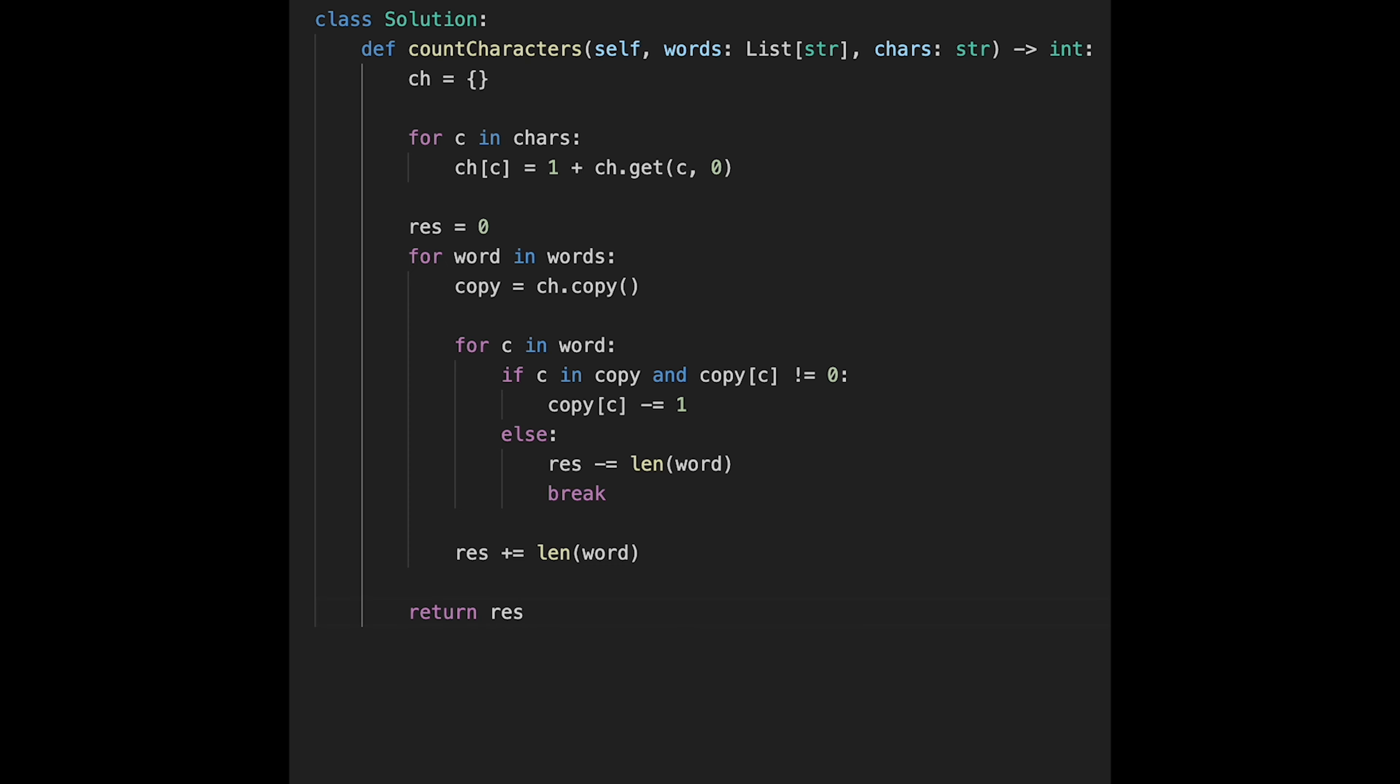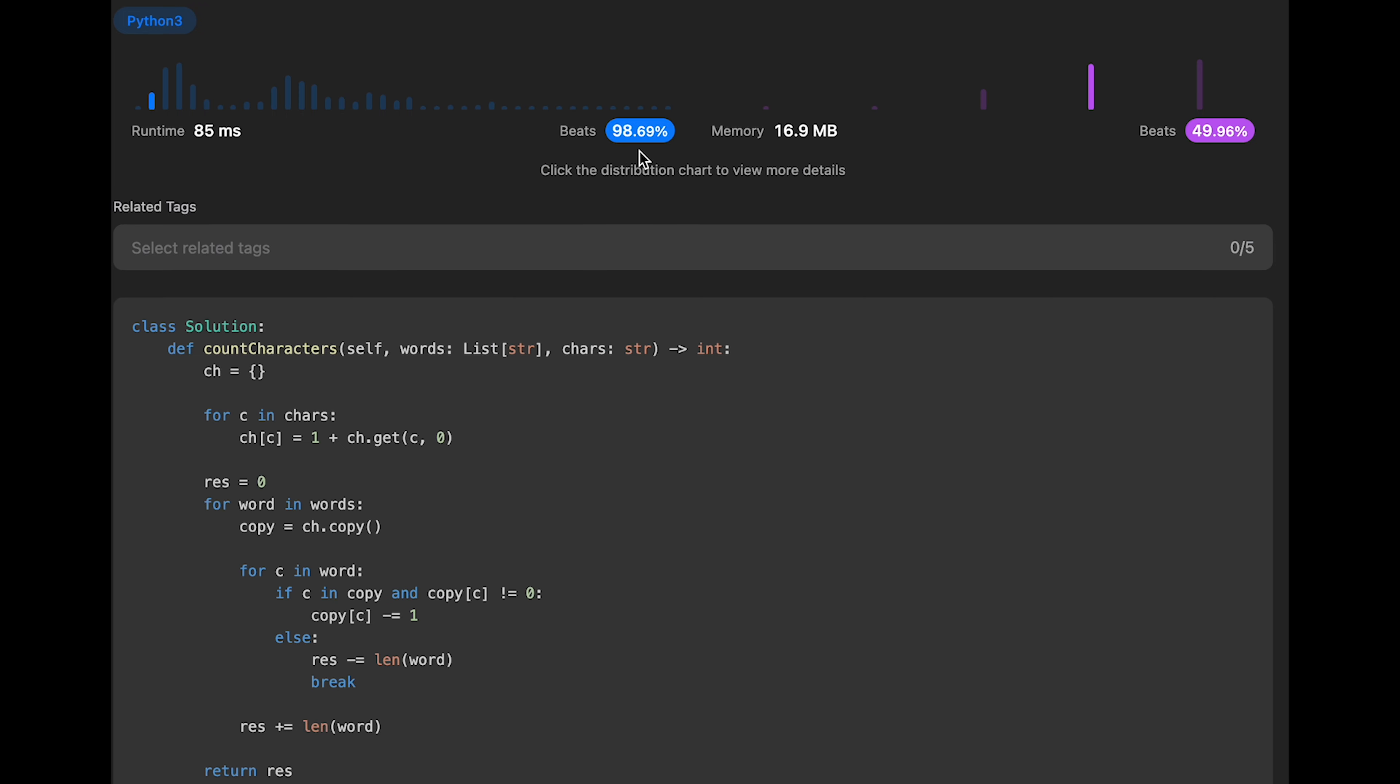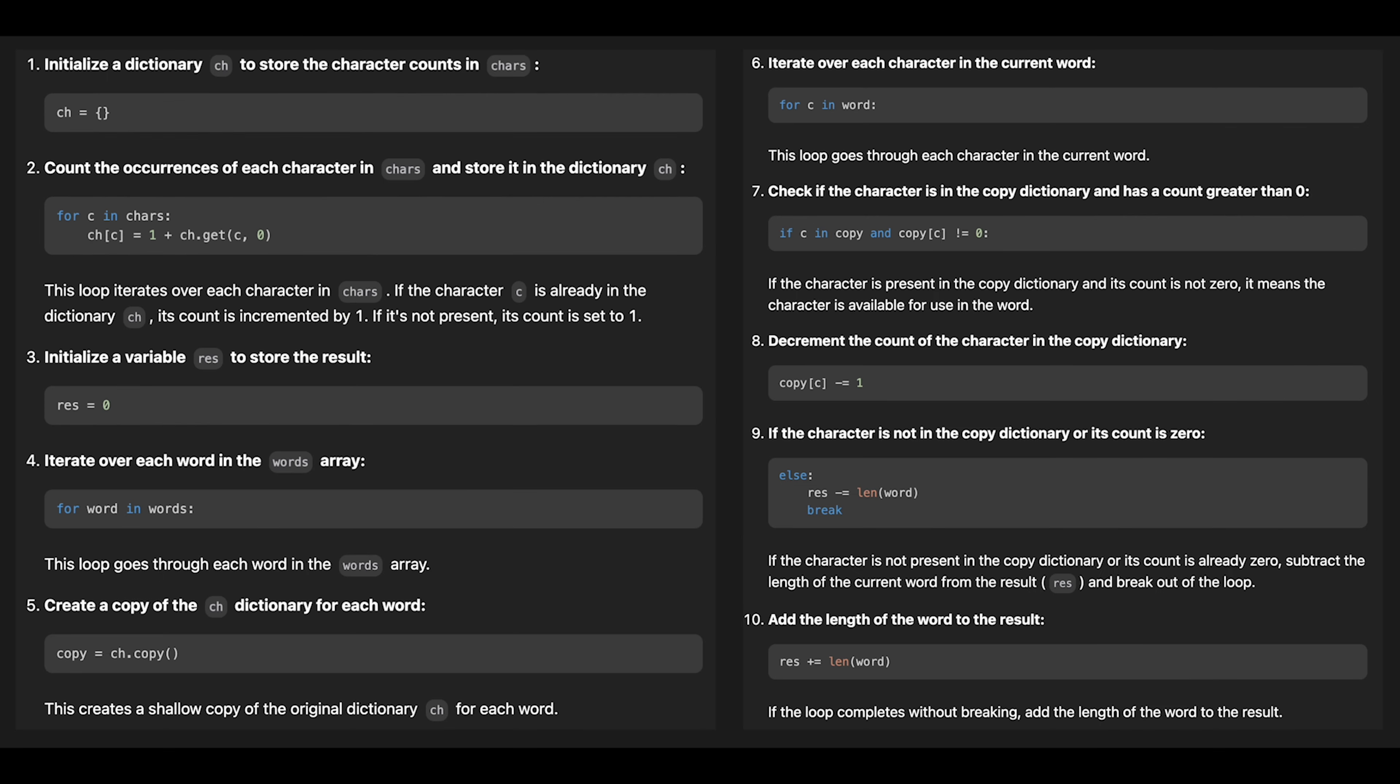Yeah, so let me submit it. Yeah, it looks good. Very efficient algorithm, beat 98%. Time complexity of this solution should be O(m * n + m * k), where m is number of words, n is like copying the dictionary here, and k is length of current word here. Space complexity is O(n) for the ch hash map.